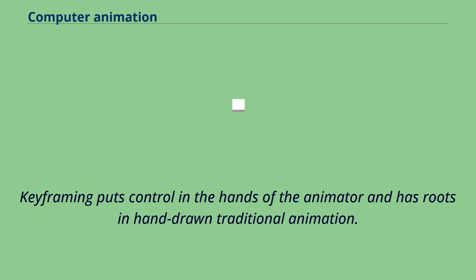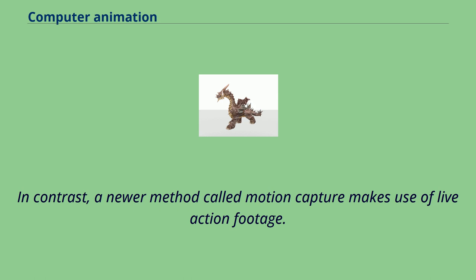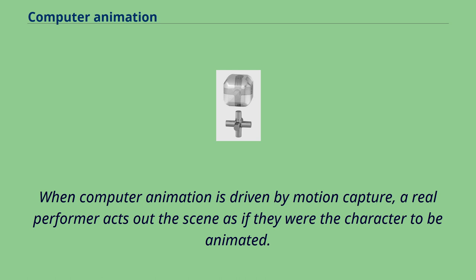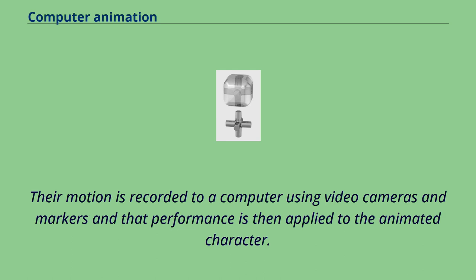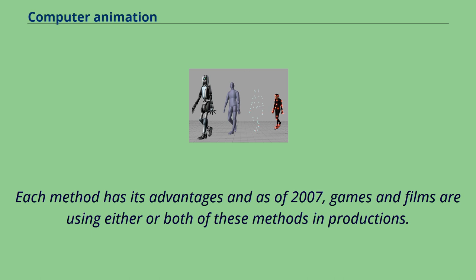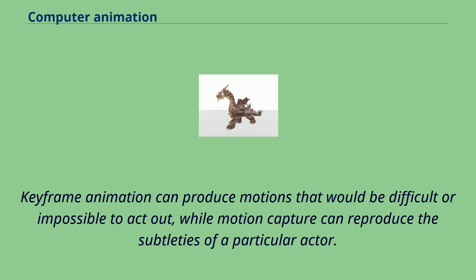Keyframing puts control in the hands of the animator and has roots in hand-drawn traditional animation. In contrast, a newer method called motion capture makes use of live-action footage. When computer animation is driven by motion capture, a real performer acts out the scene as if they were the character to be animated. Their motion is recorded to a computer using video cameras and markers, and that performance is then applied to the animated character. Each method has its advantages — keyframe animation can produce motions that would be difficult or impossible to act out, while motion capture can reproduce the subtleties of a particular actor.